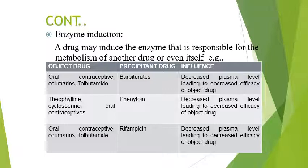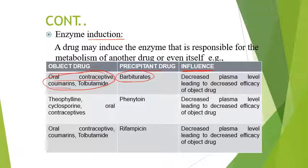Now we will see some examples of enzyme induction. These are the object drugs, the precipitant drugs, and the influence — that is, the result. For example, barbiturates increase the enzyme production — the enzyme which causes the metabolism of oral contraceptives, coumarins, and tolbutamide. If the enzyme is induced, that means it is produced in large amounts, then the pharmacological action expected from these drugs will not be achieved. It leads to decreased plasma levels, leading to decreased efficiency of the object drug.